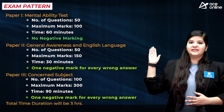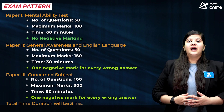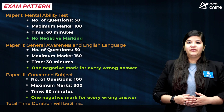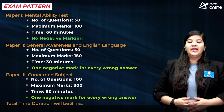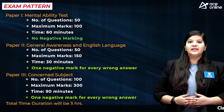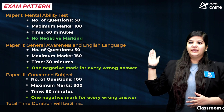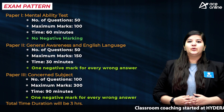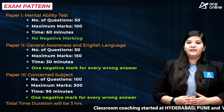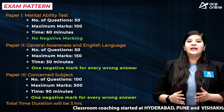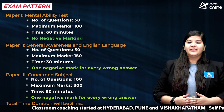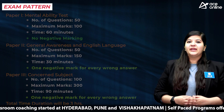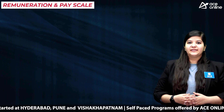In Paper 1 there will be 50 questions for 100 marks, with a time duration of 60 minutes. In Paper 2 there will be 50 questions for 150 marks, with a time duration of 30 minutes. In Paper 3 there will be 100 questions for 300 marks, with a time duration of 90 minutes.